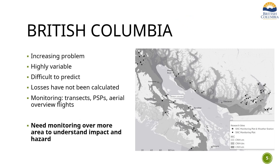In British Columbia, it's become an increasing problem over the past decade related to changing weather patterns. We've seen increased incidents and damage. With 2.7 million hectares of coastal Douglas fir, it poses a real threat to the future growth of our coastal forests. So far, we've seen greatest growth losses in areas with high rainfall, like southwestern Vancouver Island, Chilliwack, and the Sunshine Coast. But it's been highly variable and very difficult to predict. Also, these growth losses have yet to be quantified.